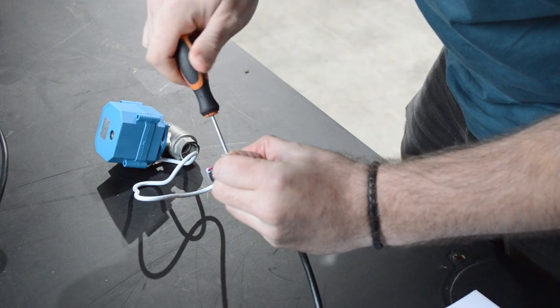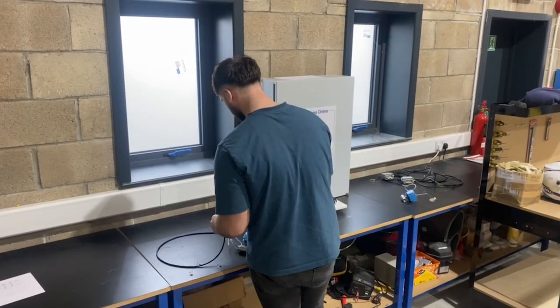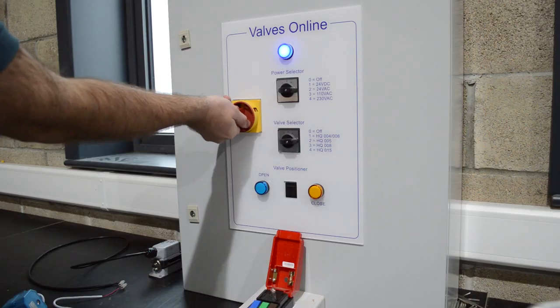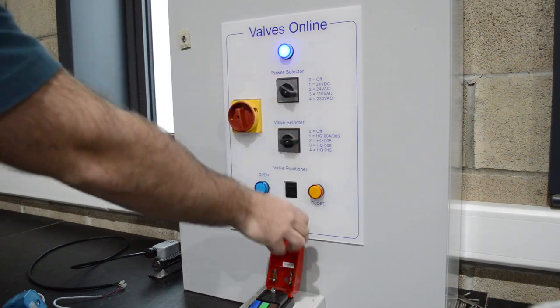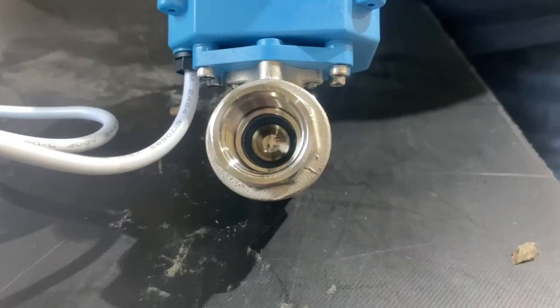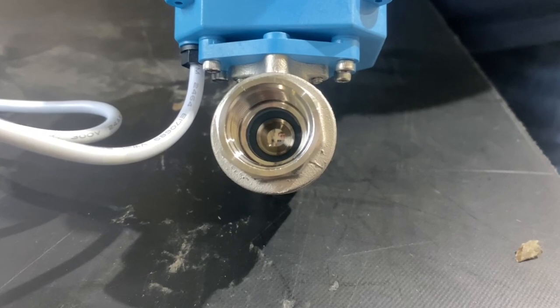Once you are satisfied that the wiring is connected, we can now turn to our master control panel to activate our valve. The full bore operation allows for maximum flow capacity and a reduction in pressure loss.